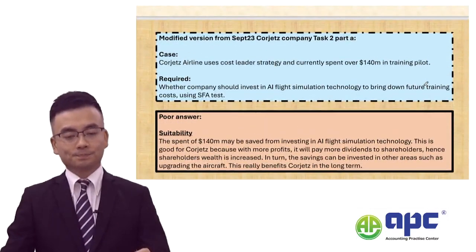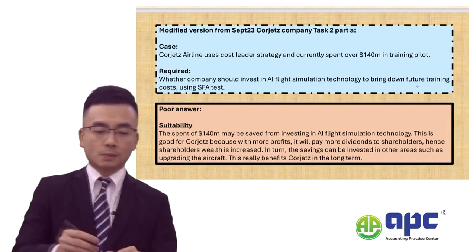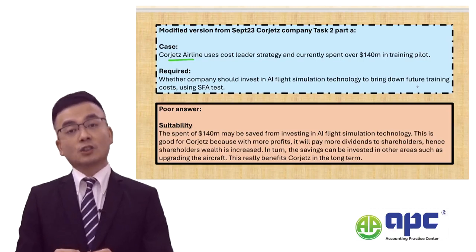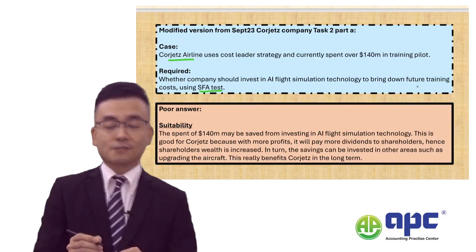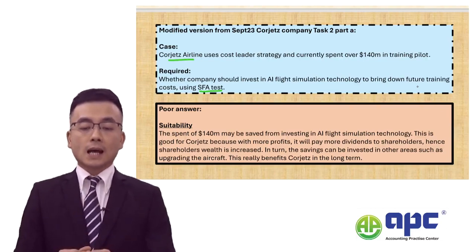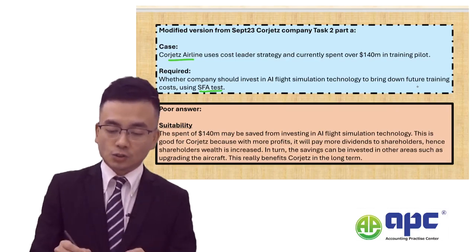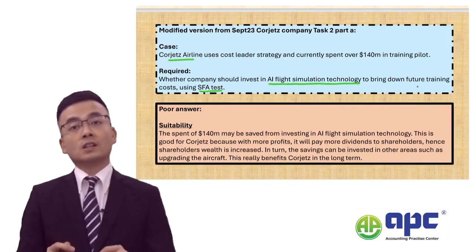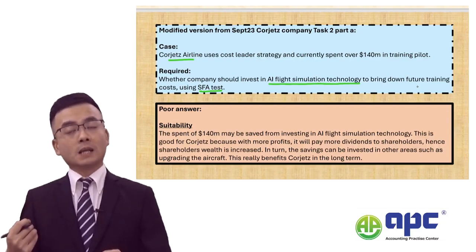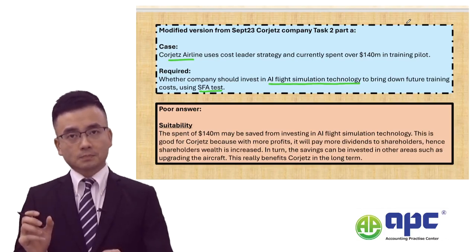Now let's see an example. I've taken this from the first pre-seen of the SBL exam — it's called the Cogest Company. The Cogest Company was a budget airline business. In the actual exam question from Task 2 Part A, it asks students to use the SFA tests, because Cogest's airline business currently uses a cost leader strategy as it runs a budget airline, and it currently spends over $140 million training their pilots. So the exam considers whether to introduce AI flight simulation technology — if Cogest invests this money, it may save $140 million at some point in the future. Whether or not it is suitable to do that?